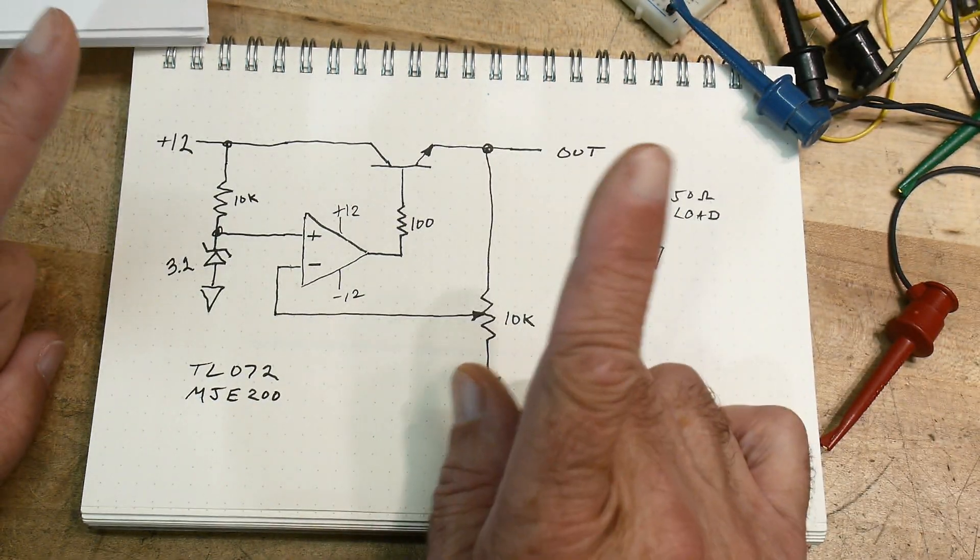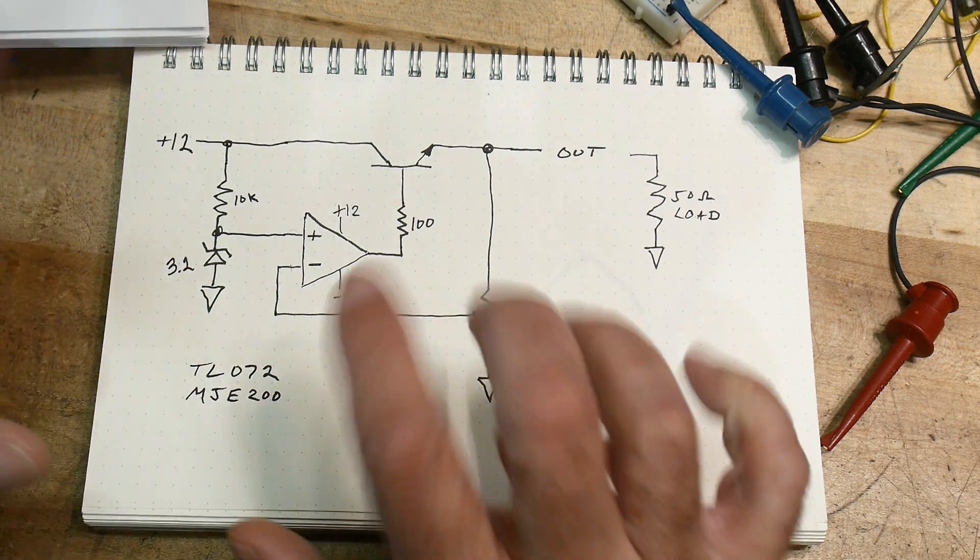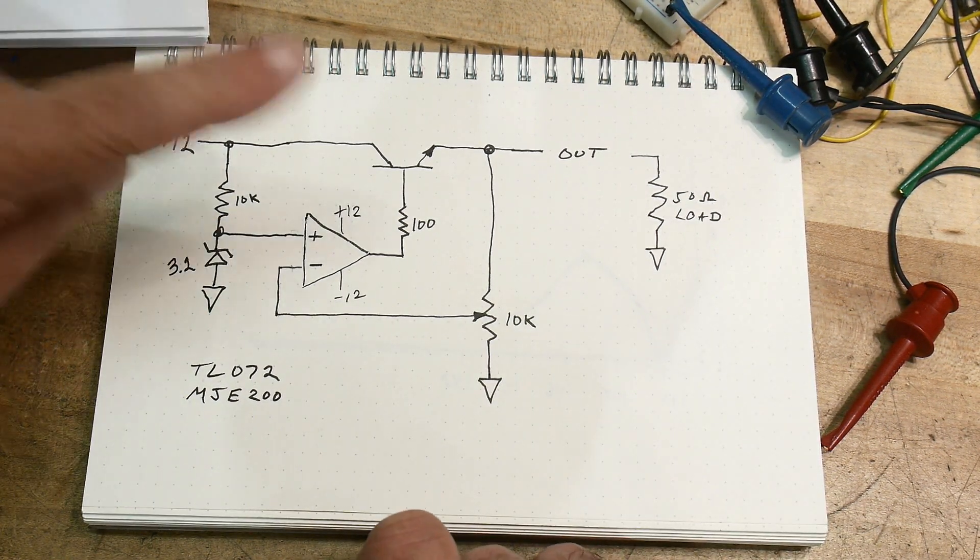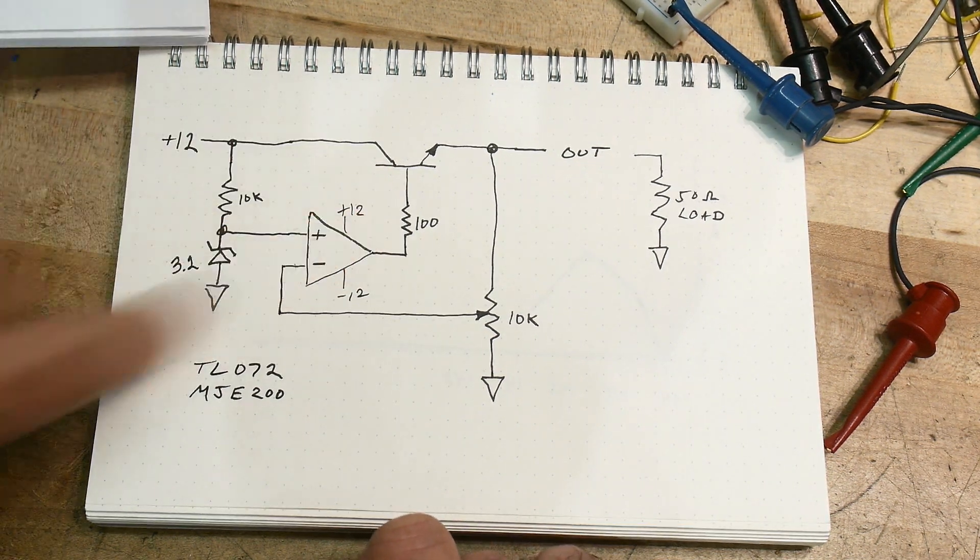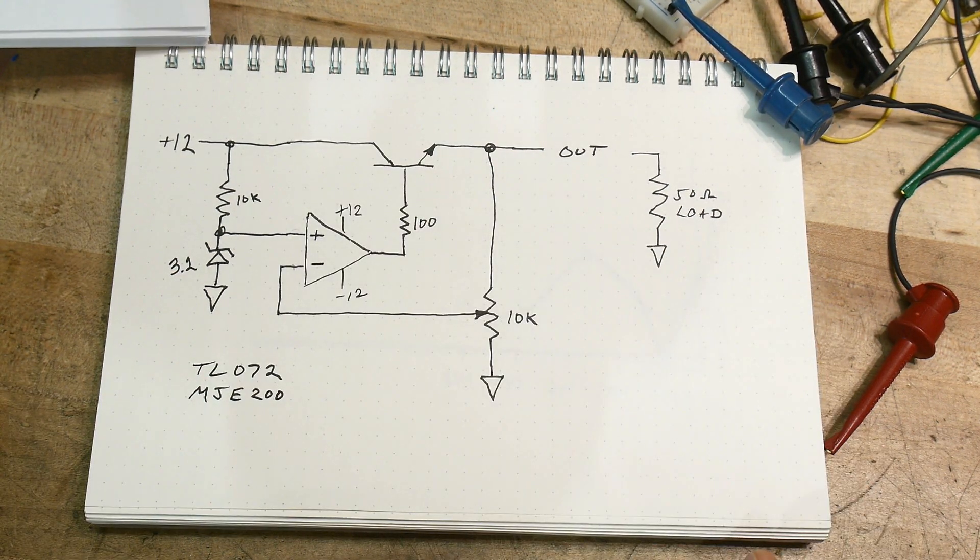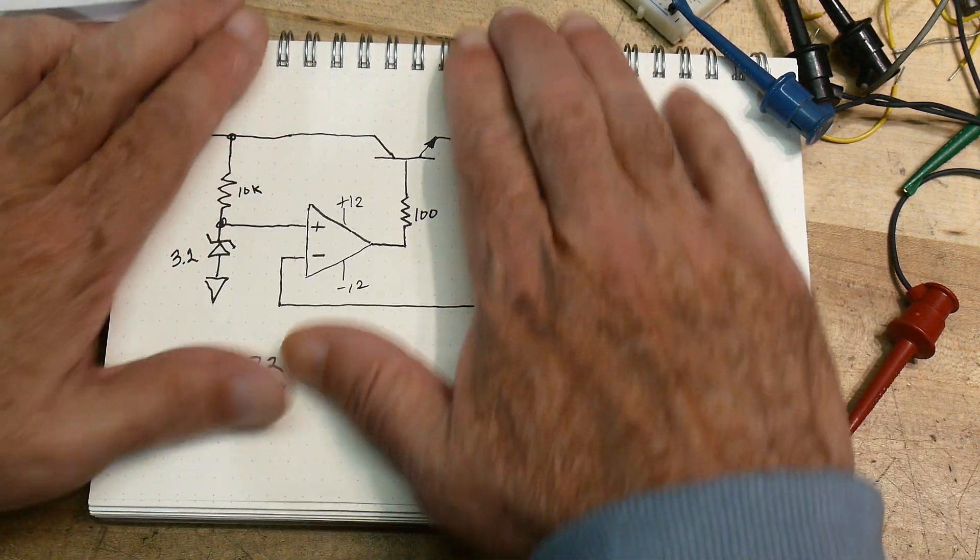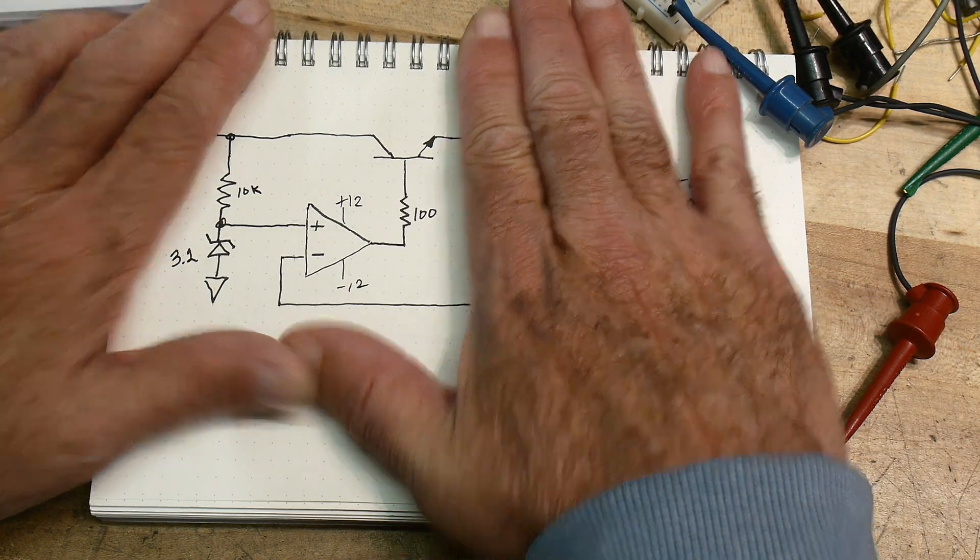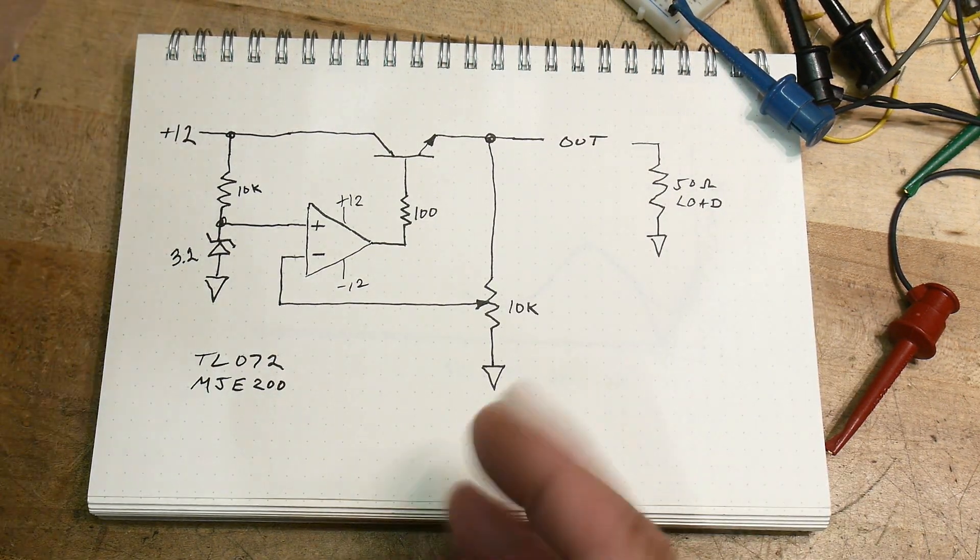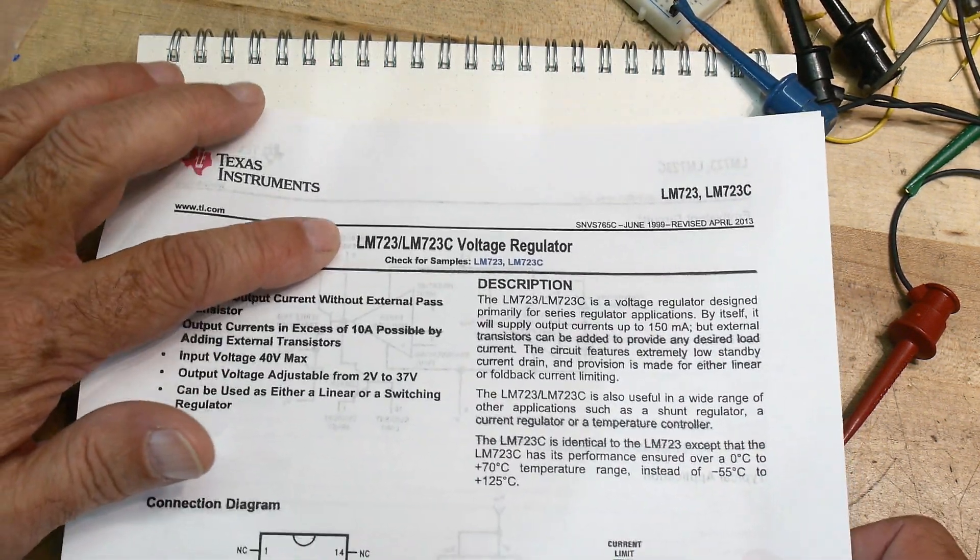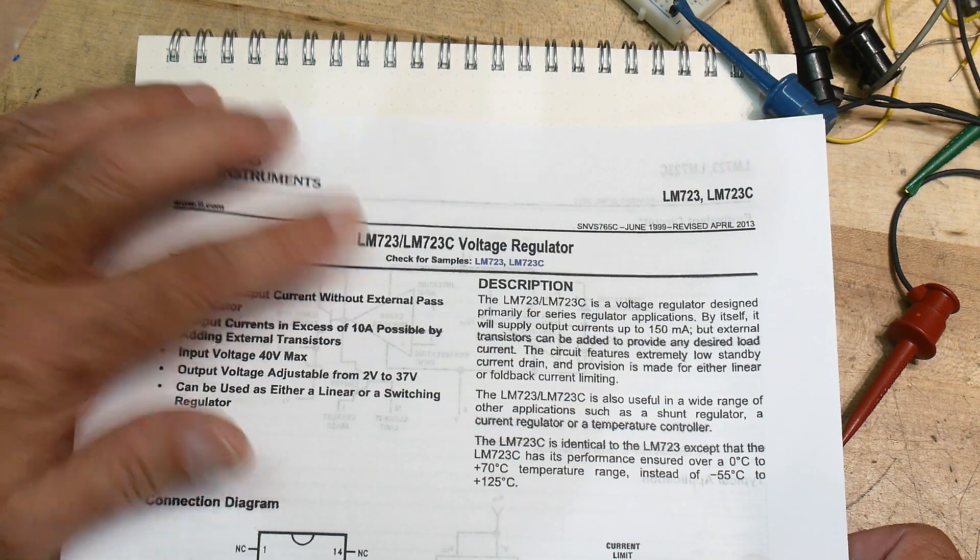It has all these things: it has a zener diode built in, it has a comparator built in, it has an op amp built in, it has a PNP transistor built in. It's basically that on a chip. So what is that chip? It is a very old chip, it is an LM723. It's been around forever and they still make them because it's got everything you need.